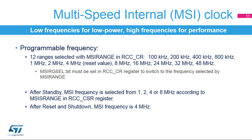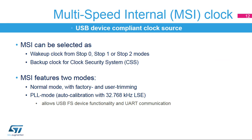The MSI RGSEL bit must be set in order to select the frequency provided by the MSI range. The MSI frequency after wake-up from standby mode is configurable between 1, 2, 4, or 8 MHz, through the MSI-S range control bits. The frequency after reset or at wake-up from shutdown mode is 4 MHz. The MSI can be selected as a wake-up clock from stop 0, stop 1, or stop 2 modes, and as the backup clock if an HSE failure is detected by the clock security system.